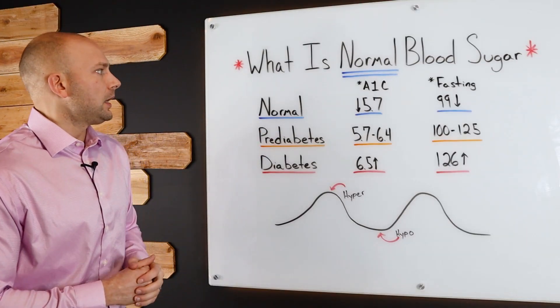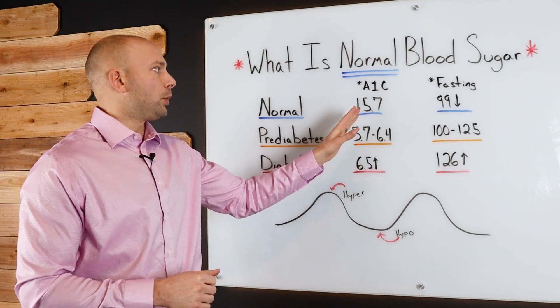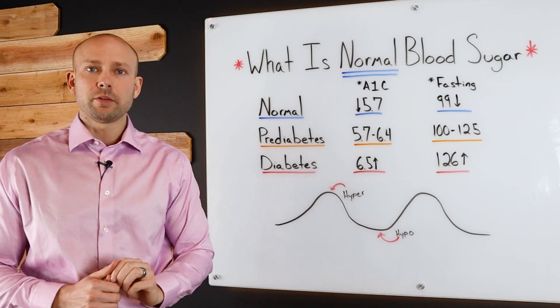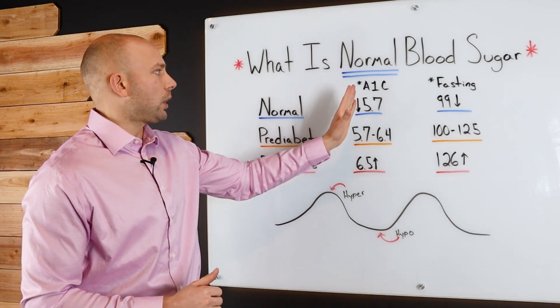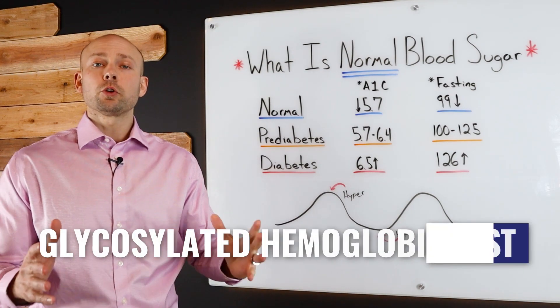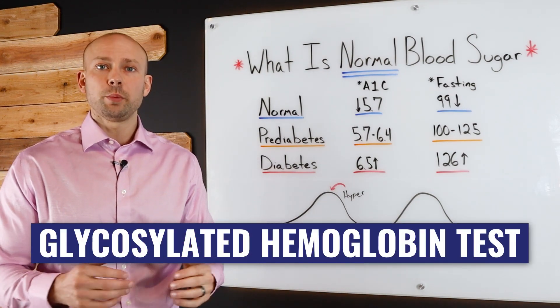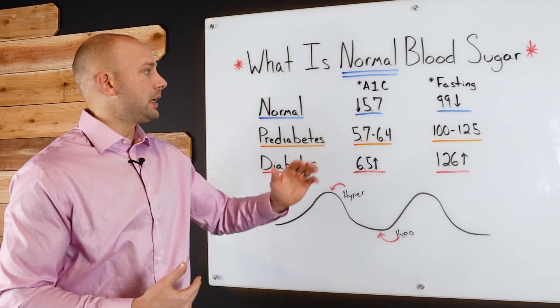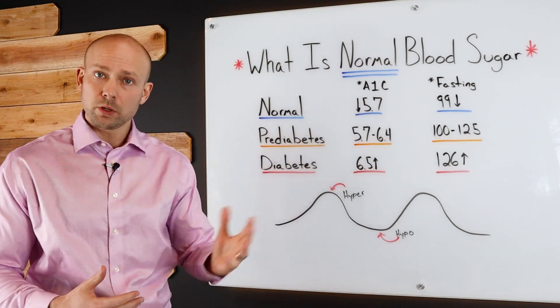Let's start with normal here. When we look at normal, we're looking at below or at 5.7. This is your A1C reading. This A1C reading is referred to as glycosylated hemoglobin test. Your doctor will do a blood test and give you this number. If it's 5.7 or below, it's normal.